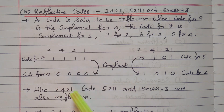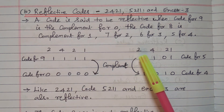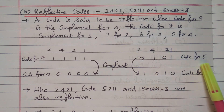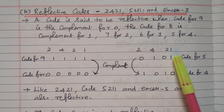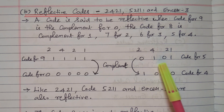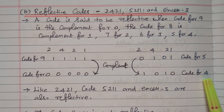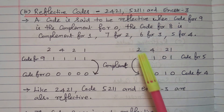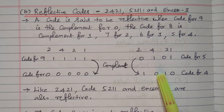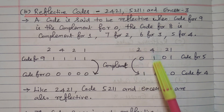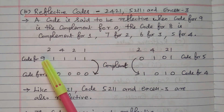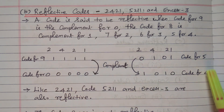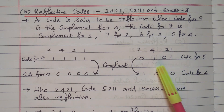Similarly, we will go for one more example. Take the same code 2421. The code for five: we need five, so we make the second position and last position one, so that four plus one will be five. Similarly, for code for four, we make the first and third position one, so that two plus two will be four. The code 0,1,0,1 complement is 1,0,1,0 — both are complemented. So the code for nine and zero is complement, and code for five and four are complement. That is why it is called a reflective code.